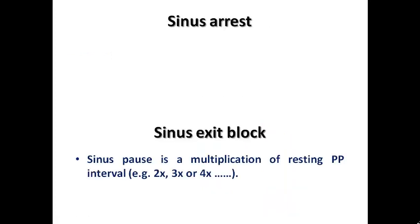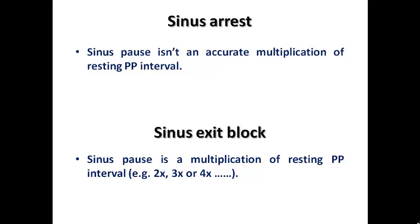How do we differentiate sinus arrest from sinus exit block on ECG? In sinus exit block, since the SA node was still working, the sinus pause is an exact or accurate multiple of the resting PP interval — for example, twice, three times, or four times the resting PP interval. Whereas in sinus arrest, the sinus pause is not an accurate multiple of the resting PP interval, because the SA node stopped its function temporarily and then resumed. So in most cases, sinus arrest produces a pause that is not an exact multiple of the PP interval.